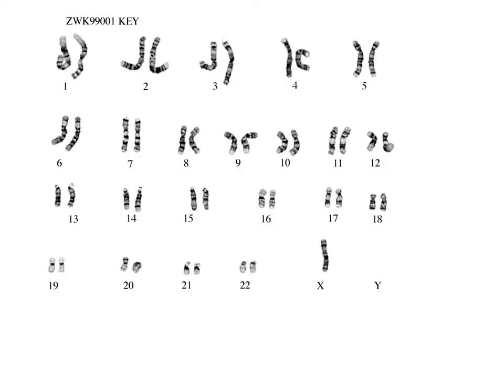This karyotype comes from a person who's missing one of the sex chromosomes. We would write her karyotype as 45, because she's missing a chromosome, and X. We don't need to write anything else in the notation, because if we just write X, it's obvious which of the chromosomes is missing — there should be either another X or a Y chromosome.